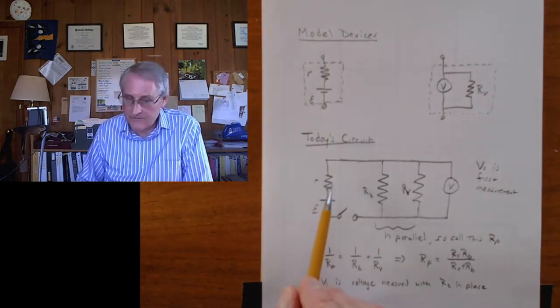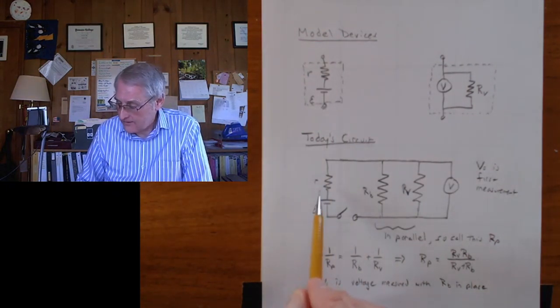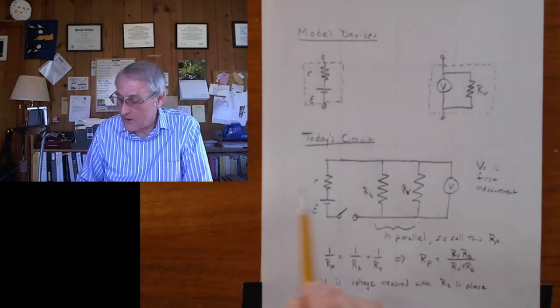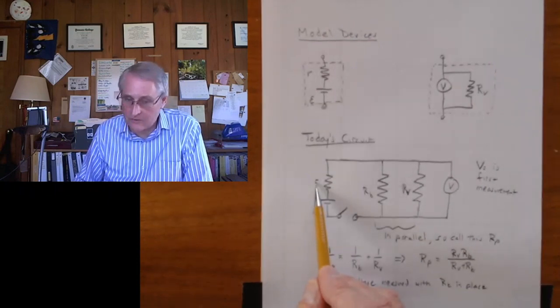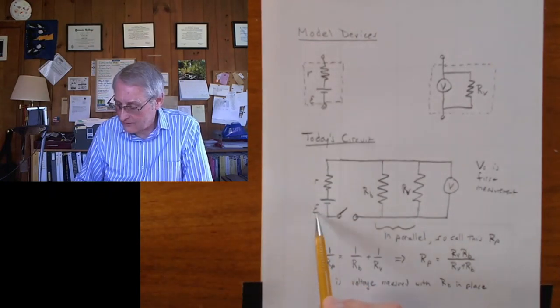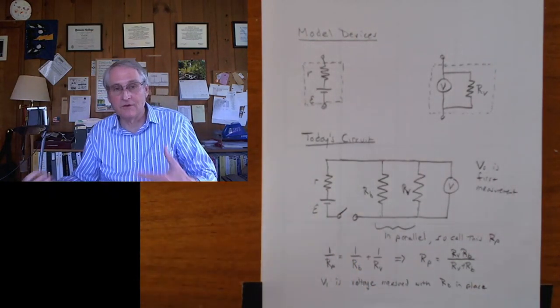And now you'll see from the algebra in the lab handout, we can solve, there's two equations and two unknowns with V naught and V1. And so you can solve for R, the internal resistance, and you can solve for the EMF. And we'll get multiple values for those.